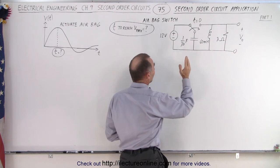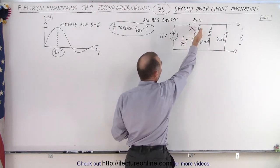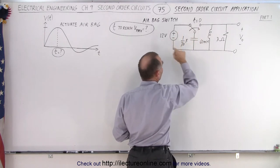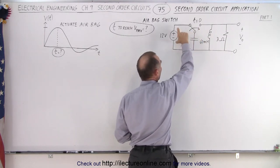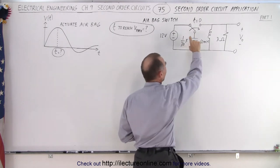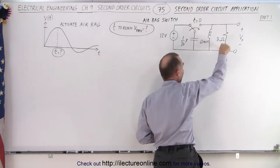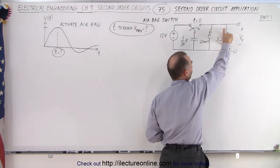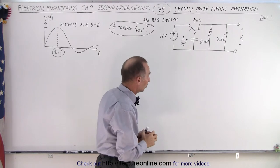At a moment in time when the airbag needs to be activated, the switch will go to the other side, disconnecting it from the battery. But now the capacitor has 12 volts across its terminals, and that voltage and the charges on the capacitor will then drive the rest of the circuit. What we're trying to determine is the voltage across the 3-ohm resistor.